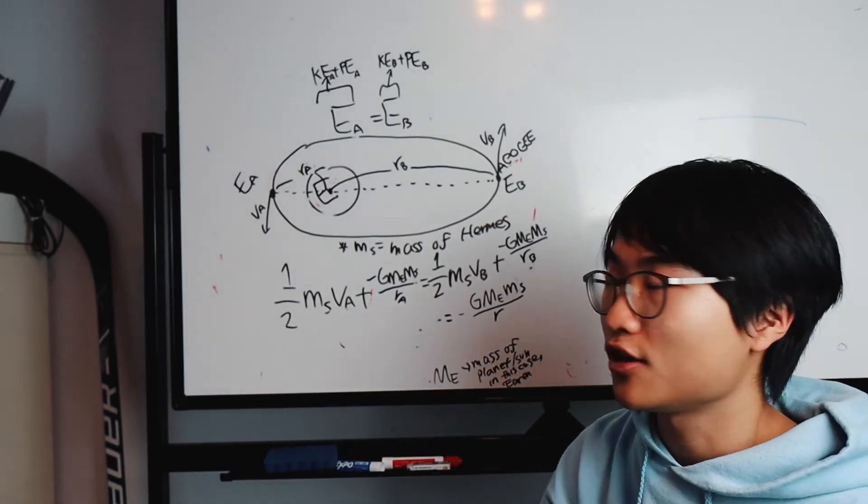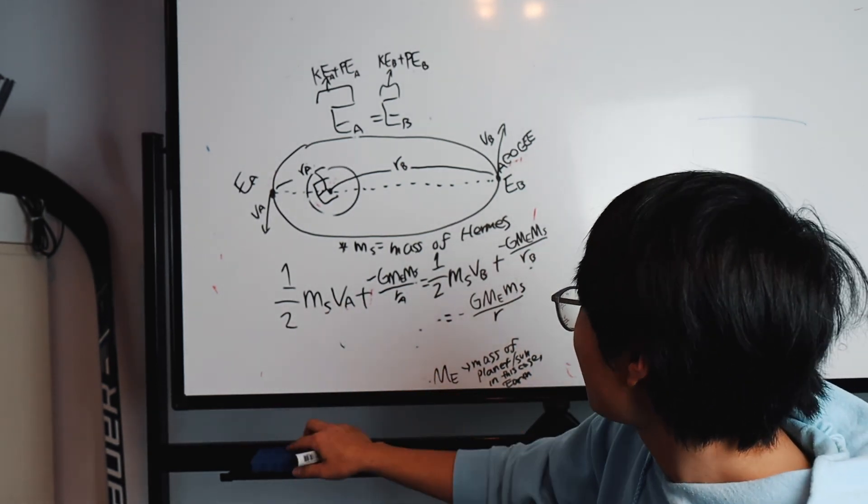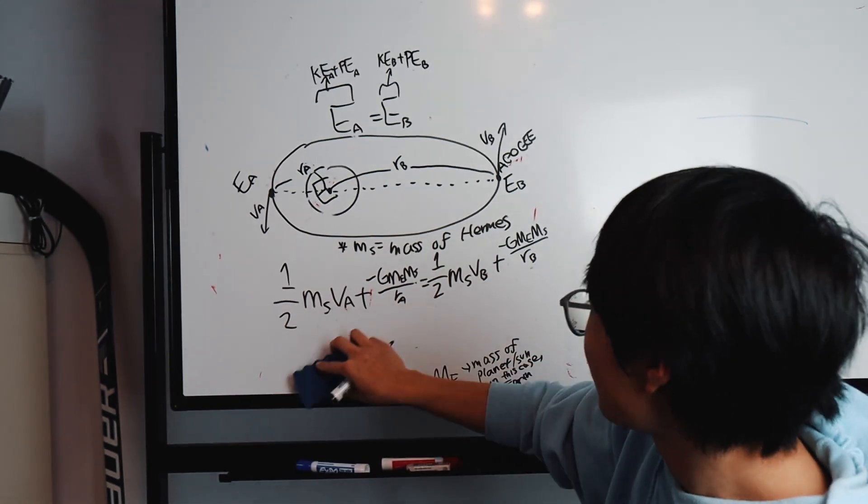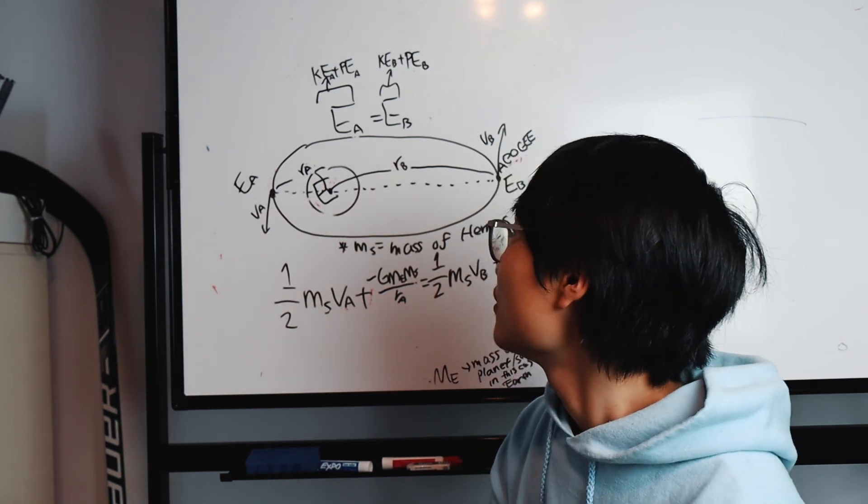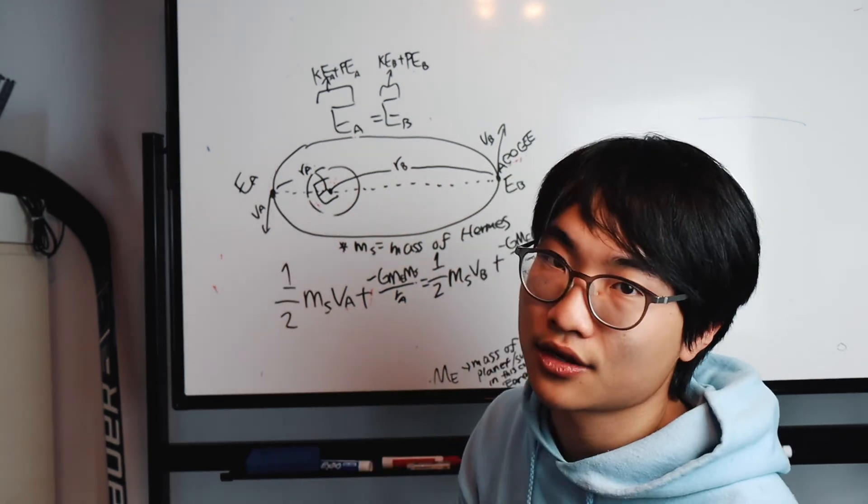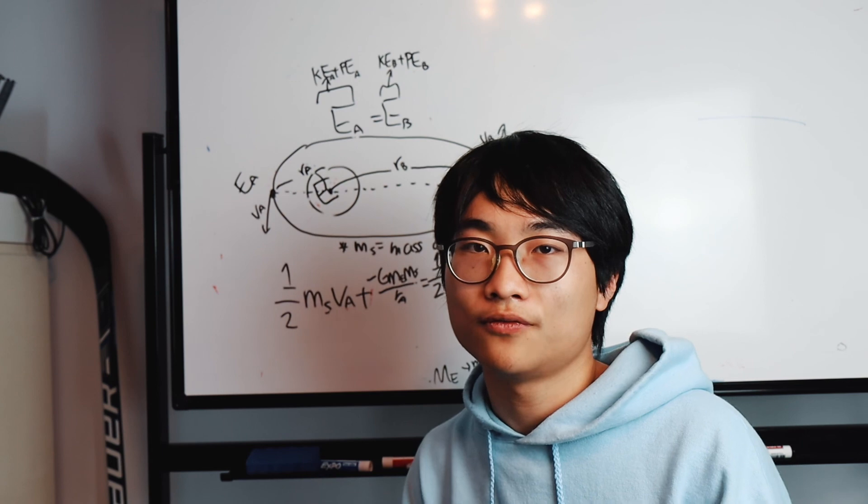Always remember, G is a constant. It's not going to change, so we don't have to label A or B. There you go, we got the formula figured out. Now we just have to plug in the actual numbers to calculate the potential energy, kinetic energy, and total amount of energy of the Hermes spacecraft.